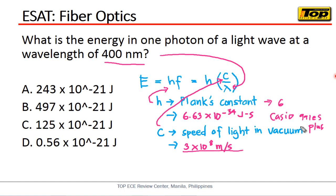Have you calculated the value of E? The energy will be in terms of joules. So our answer here will be letter B, approximately 497 times 10 to the negative 21 joules. That will be the energy in one photon of a light wave at a wavelength of 400 nanometers.